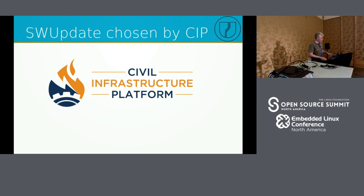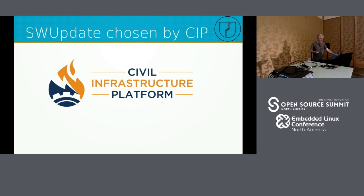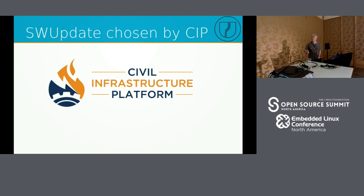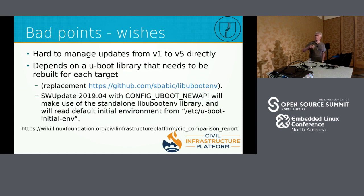Not only individual updaters but also other projects need to update their software. The Civil Infrastructure Platform (CIP) is a project under the Linux Foundation with the goal of providing very long-term support — for example, 10 years of kernel support. They needed an update agent, made a comparison, and chose SWUpdate. I don't want to discuss the good points; I want to focus on the bad points, because those are things that can be solved in the future.